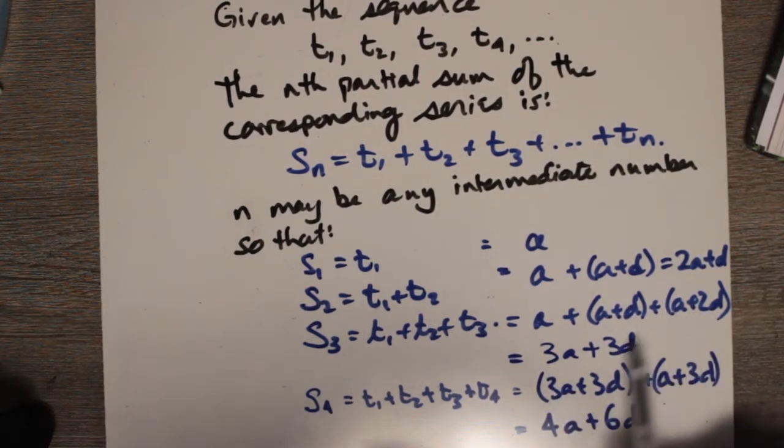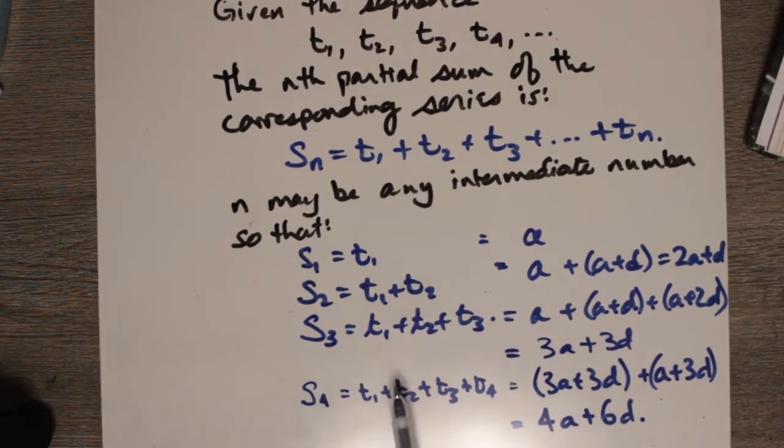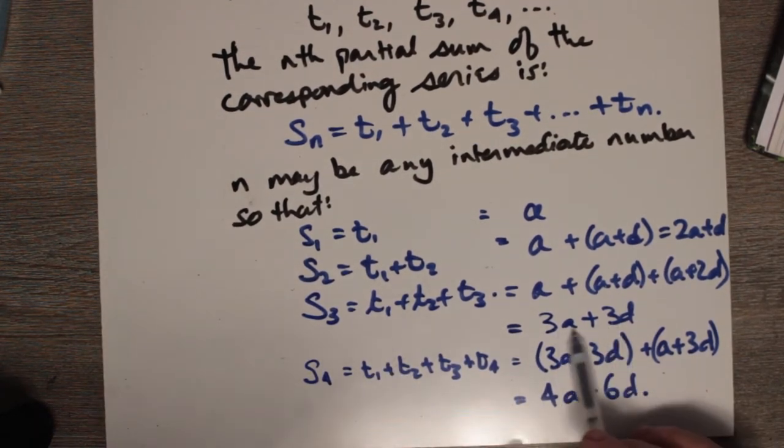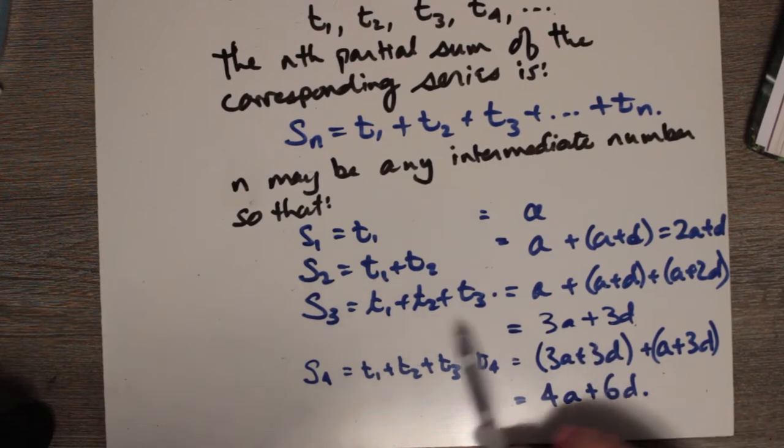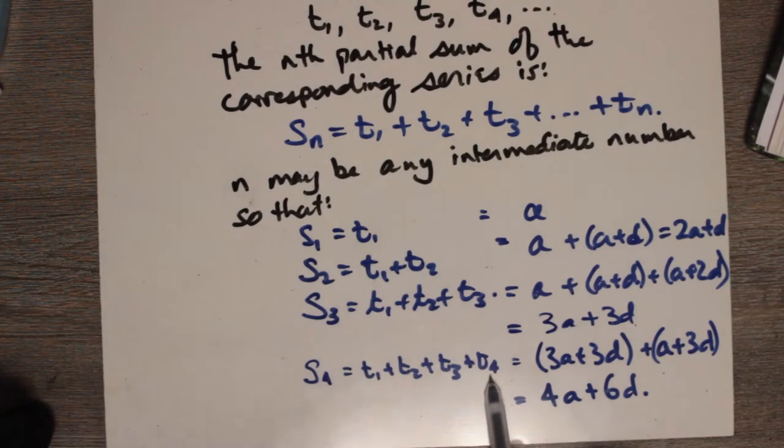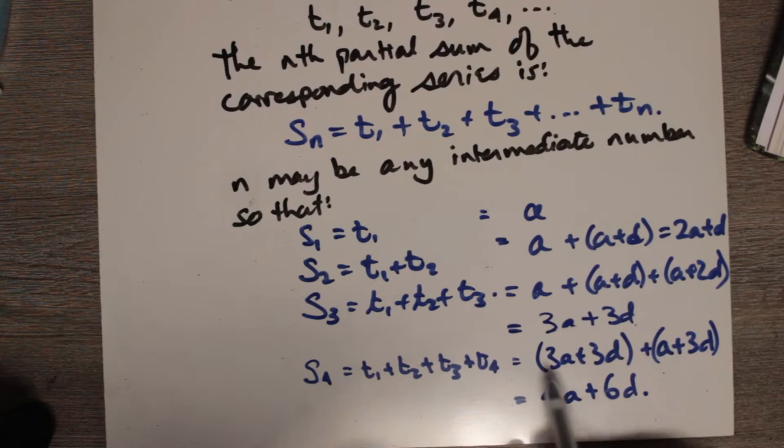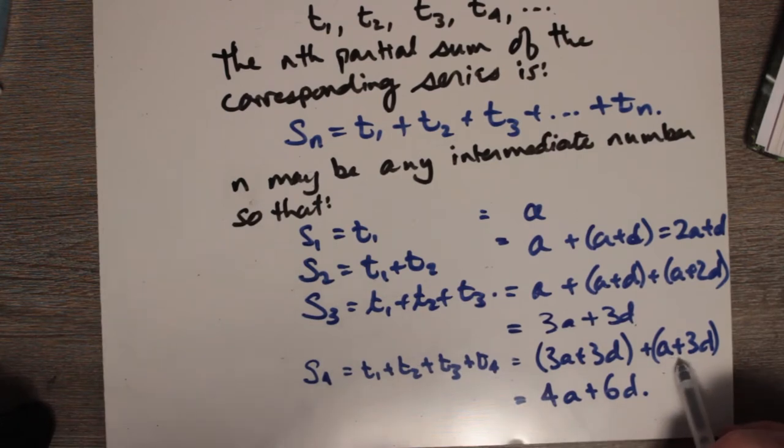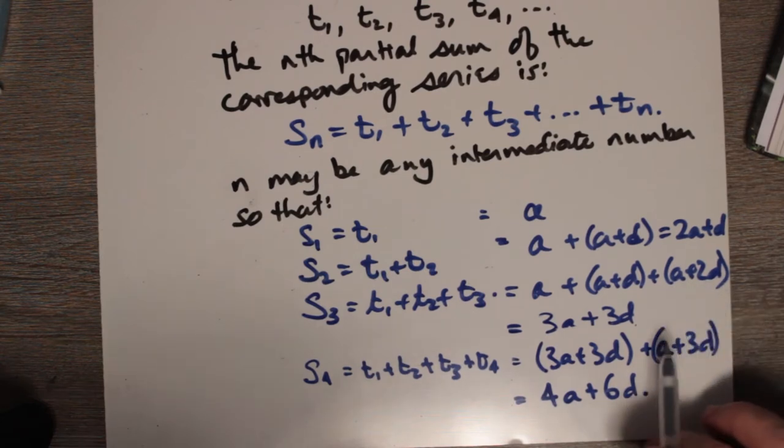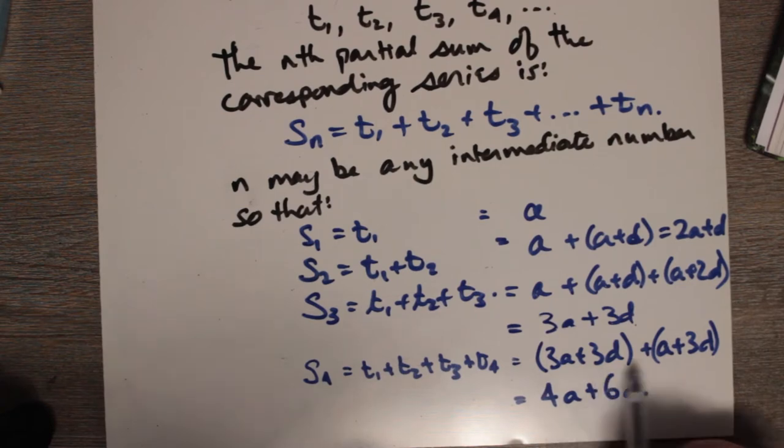For the fourth, I'll shorten this by saying S4 is just S3 plus an extra term, t4. So S3 was already given as 3a plus 3d, so then we add another term t4, which turns out to be a plus 3d, and we get 4a plus 6d.